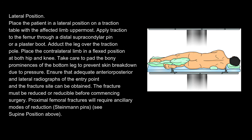Lateral position. Place the patient in a lateral position on a traction table with the affected limb uppermost. Apply traction to the femur through a distal supracondylar pin or a plaster boot. Adduct the leg over the traction pole. Place the contralateral limb in a flexed position at both hip and knee. Take care to pad the bony prominences of the bottom leg to prevent skin breakdown due to pressure. Ensure that adequate anterior, posterior, and lateral radiographs of the entry point and the fracture site can be obtained. The fracture must be reduced or reducible before commencing surgery. Proximal femoral fractures will require ancillary modes of reduction — Steinmann pins. See supine position above.